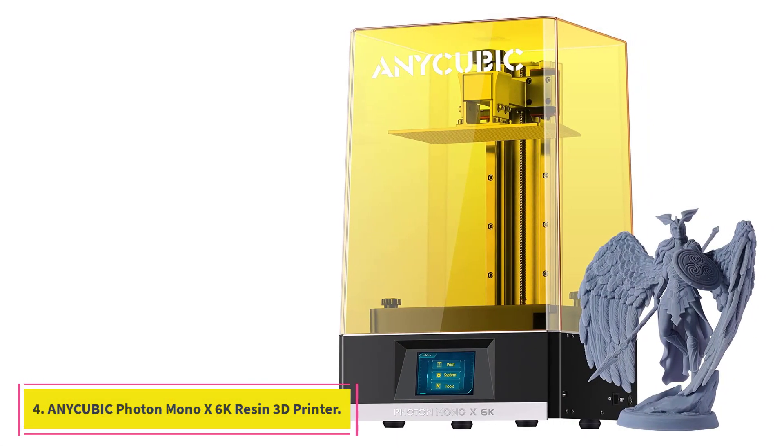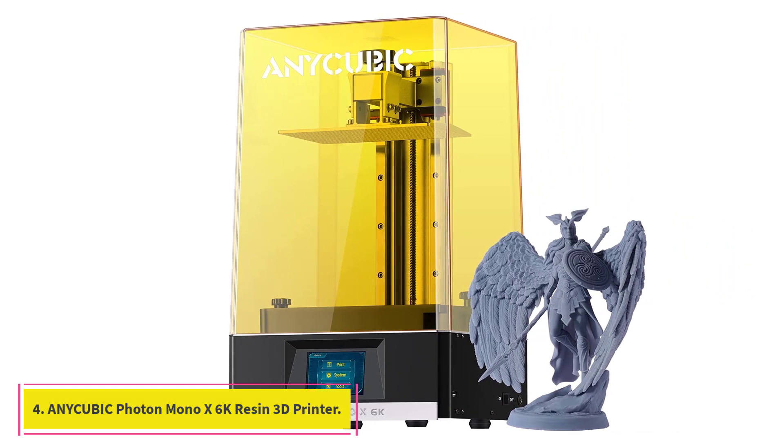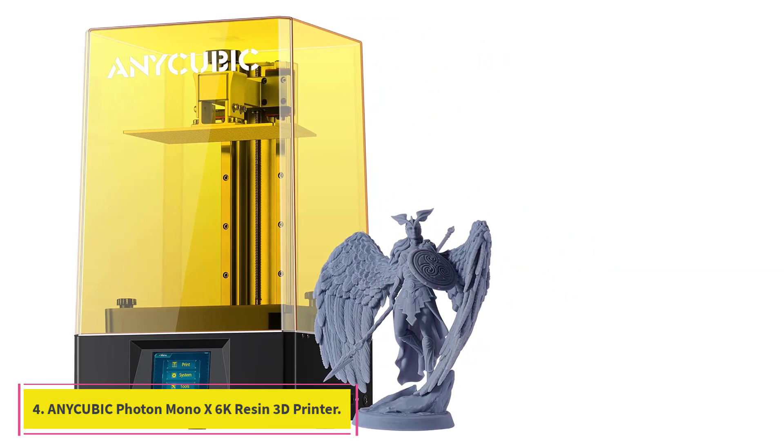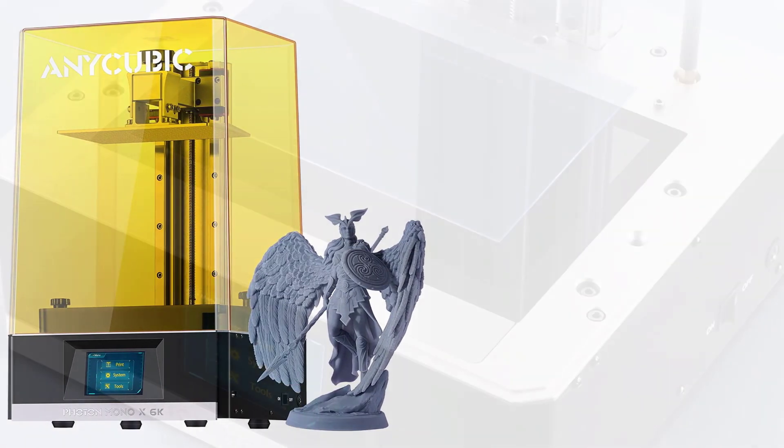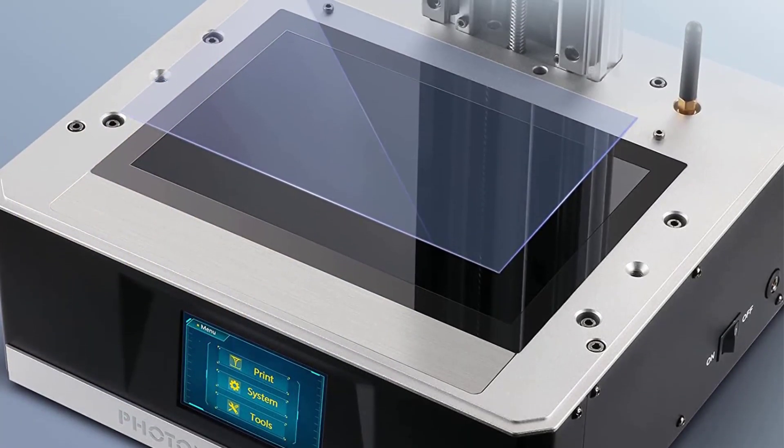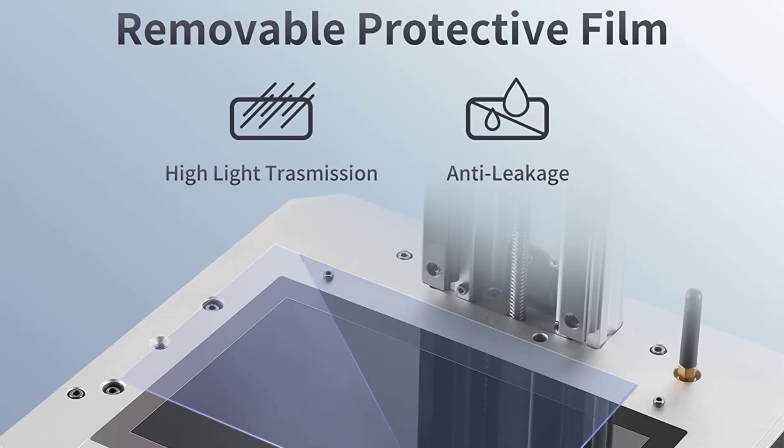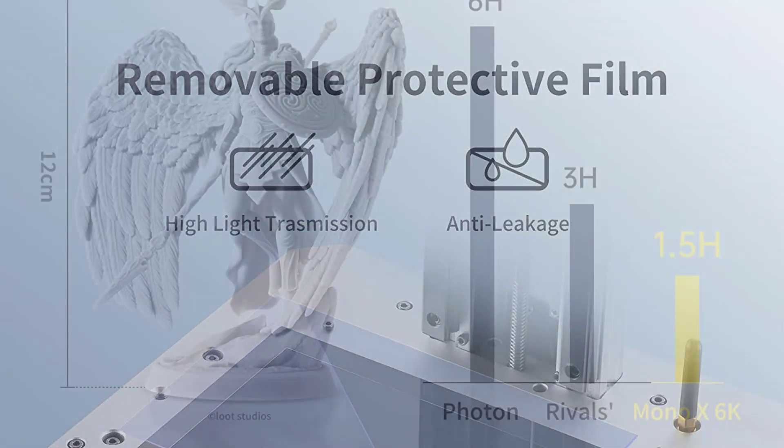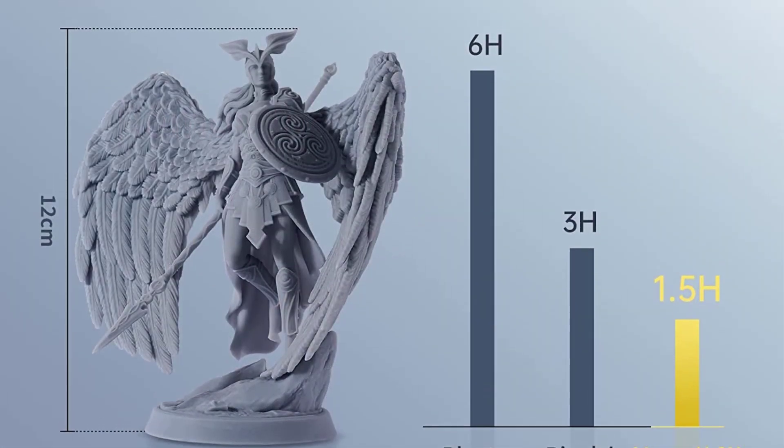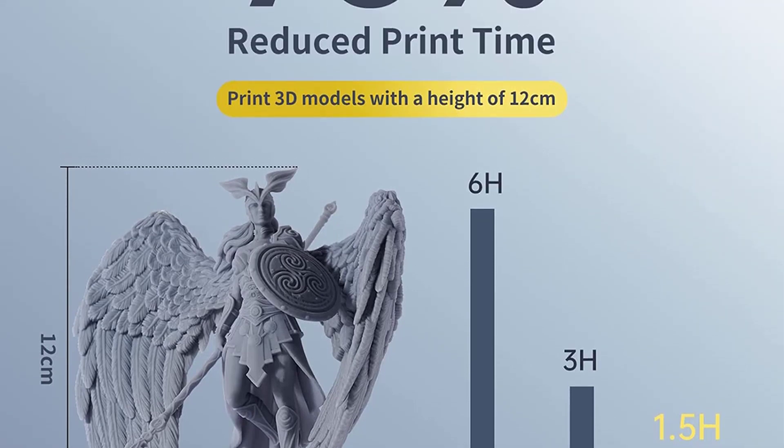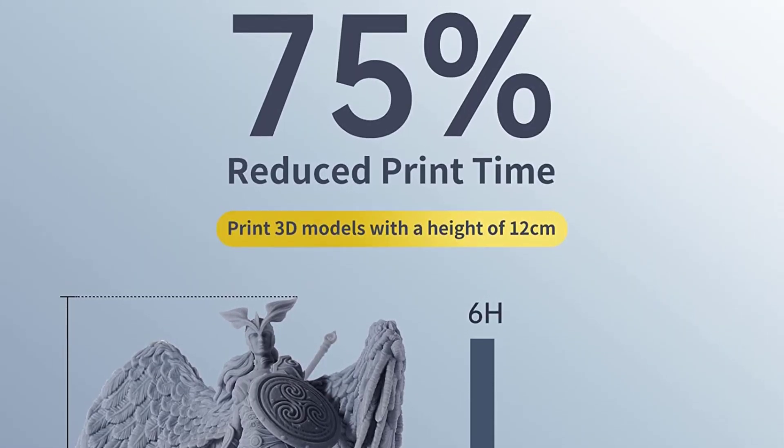At Number 4, Anycubic Photon Mono X 6K Resin 3D Printer. Even a 4K screen has its limitations, and if you need a larger print volume, it often means having to sacrifice print resolution. The Anycubic Photon Mono X 6K is designed to tackle precisely this issue while still being a relatively affordable printer.